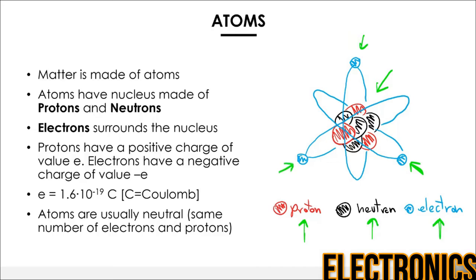Protons have a positive charge of value E, while electrons have a negative charge of value minus E. Neutrons have no charge. E is equal to 1.6 multiplied by 10 to the power of minus 19 Coulombs, where Coulomb is the unit of measurement of charge. Atoms are usually neutral, which means they have the same number of electrons and protons.